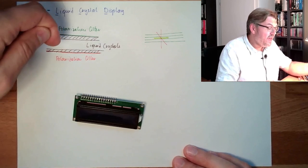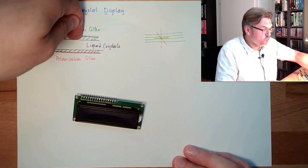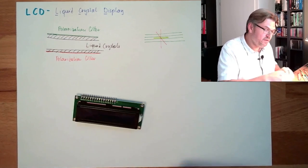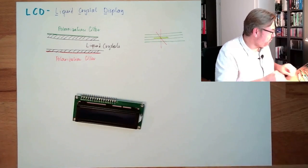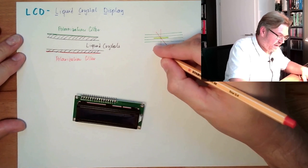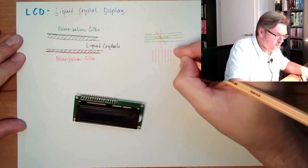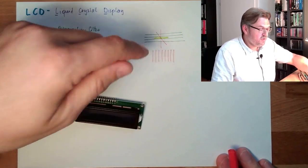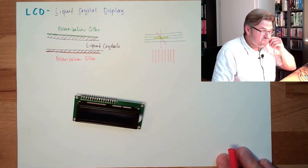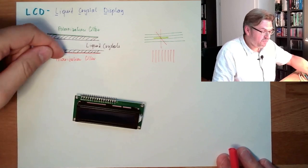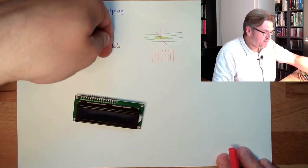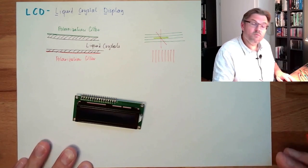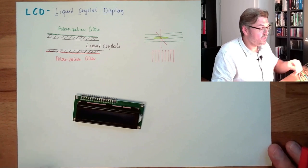So we have one polarization filter. And those liquid crystals now, they are able to turn this polarization of the light. The light just passed the polarization filter. All lights are swinging like this. And the polarization filter at the bottom, it has 90 degree polarization direction. If the liquid crystal would be just nothing, would do nothing to the light, then the light would pass the first one, swinging like this. And here, you can only pass if it's swinging like this, so it cannot pass here. So the thing we see is black. We will block the light.